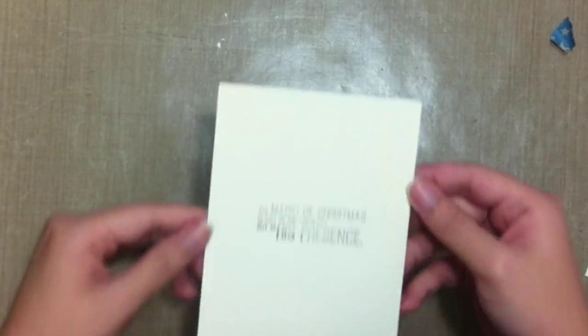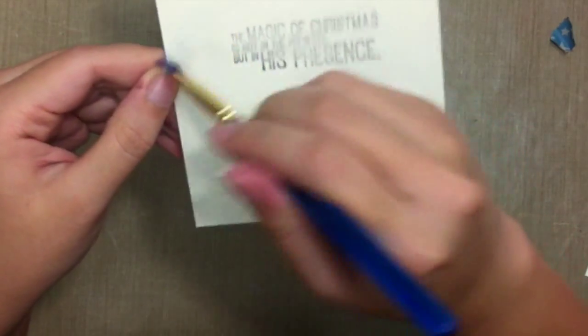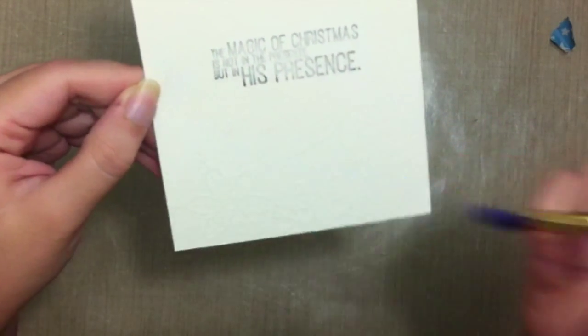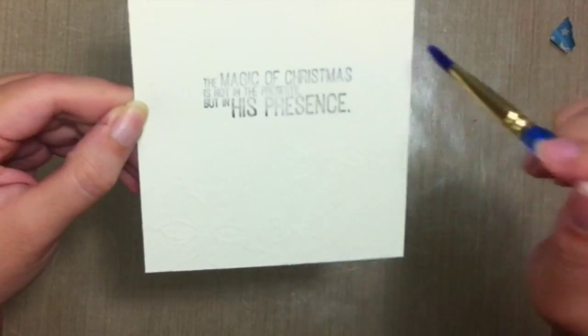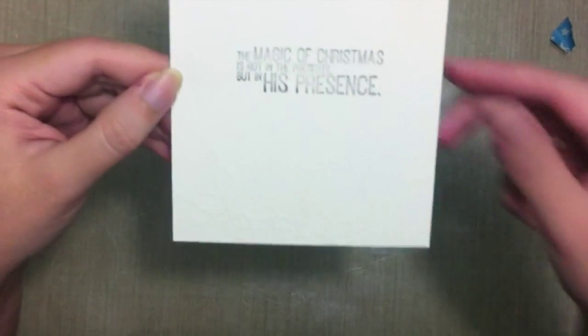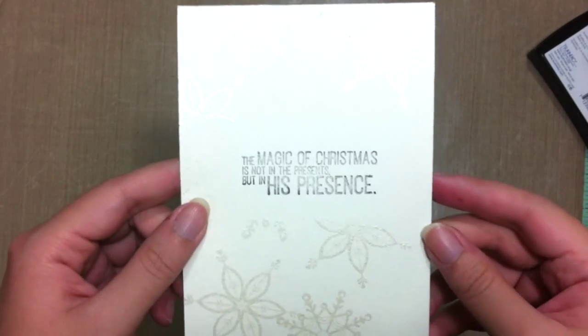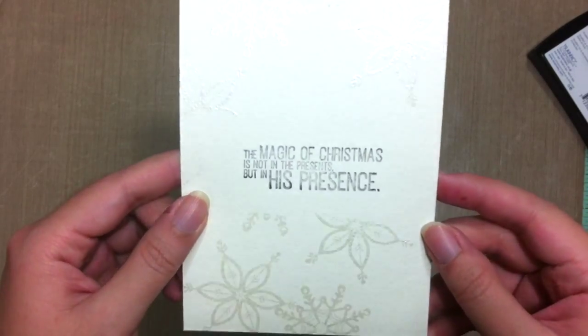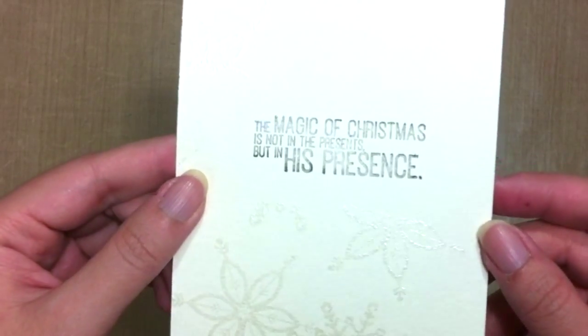Okay, so if you see any parts that caught the unwanted embossing powder, just get a dry brush and just brush it off. Alright, so I'm gonna run my heat tool over this and I'll be right back.